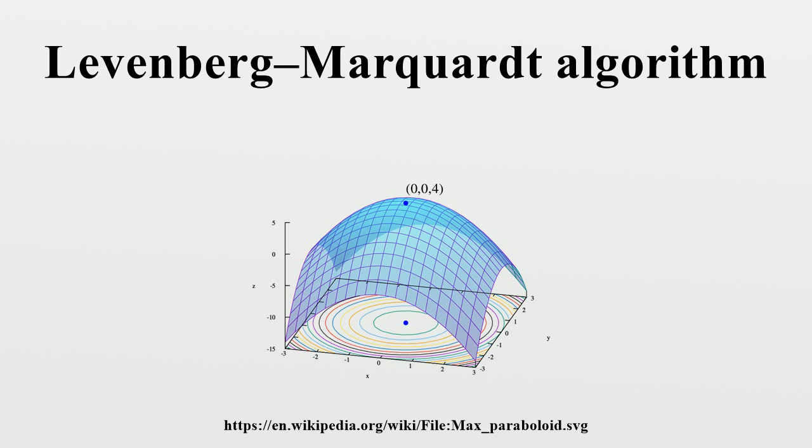Marquardt provided the insight that we can scale each component of the gradient according to the curvature so that there is larger movement along the directions where the gradient is smaller. This avoids slow convergence in the direction of small gradient.